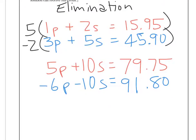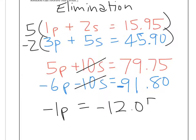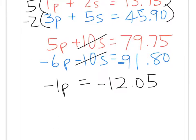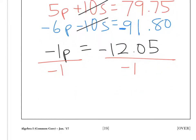Now we apply the elimination method. 10S minus 10S cancels out. Then -6P + 5P gives us -1P, and -$91.80 + $79.75 gives us -$12.05. We can't have a negative number of pizzas, so we divide both sides by negative 1, and P equals $12.05. One pizza costs $12.05.